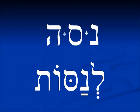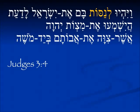Another verb we see in Pi'el is Nisa — this ends in He, but it's going to have the same idea of the extra syllable: l'nasot, but it ends in Ot, just as all the verbs which end in He. L'nasot, to try or to prove. From Judges 3:4: V'yehiyu l'nasot bam et Yisrael, l'da'at ha'yishma'u et mitzvot Yehovah, asher tziva et avotam biyad Moshe — to try and prove Israel, to know if they will listen to the commandments of Yehovah which He commanded their forefathers by the hand of Moses. L'nasot, the infinitive to try, to prove, to test.